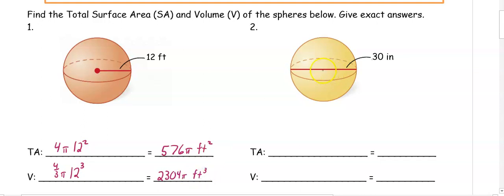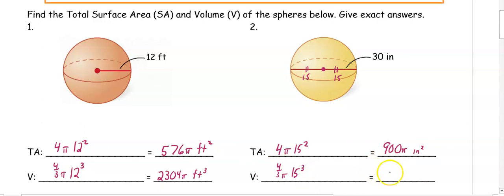In number two, 30 is the diameter, which means if we bisect it to get our radius, it's 15. So the total surface area is 4π(15²), which gives you 900π inches squared. And the volume is 4/3π(15³), which gets you 4,500π inches cubed.